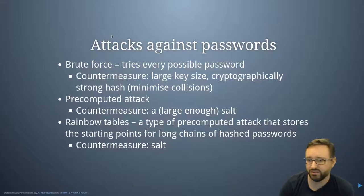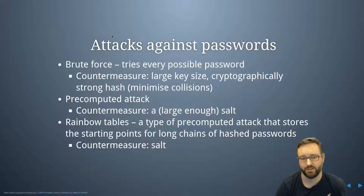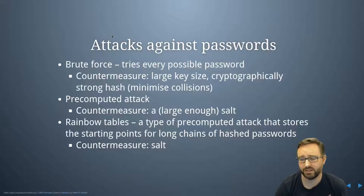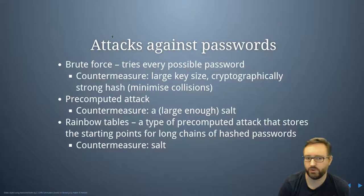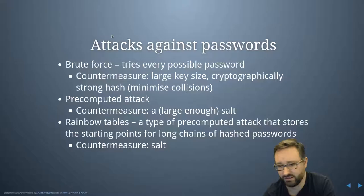Using a cryptographically strong hash function means that even an offline brute force attack can become computationally impossible on modern systems. For pre-computed attacks, the countermeasure is to use a salt — or a large enough salt — so that attackers can't pre-compute all the hashes in advance. Rainbow tables are a type of pre-computed hash that stores starting points for long chains of hashed passwords, and the countermeasure for those is also to use a salt.